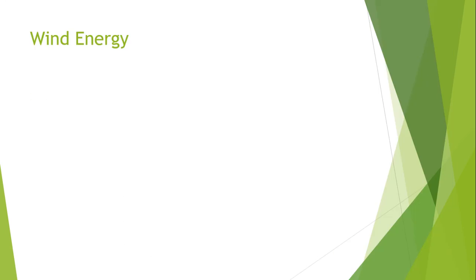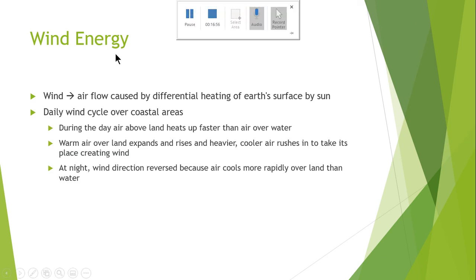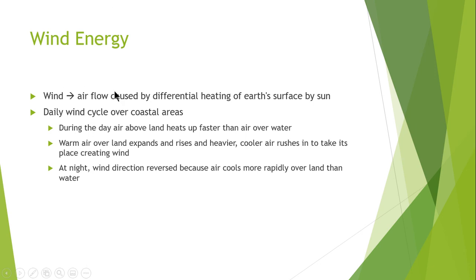The next topic is wind energy. Wind energy is the energy in airflow caused by the differential heating of the Earth due to sunlight. During the daily wind cycle over coastal areas, air above the land heats up faster than air over water because the specific heat of water is quite high. Warm air from the land expands and rises, and cooler air from the sides rushes to take its place, creating wind.